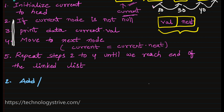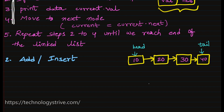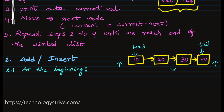The second operation we are going to discuss is add or insert operation. Adding a new node can happen in three different places: at the beginning, at the end of the linked list, or at some random position — for example, inserting after node 20. These are the three different places it mostly happens. Let's talk about inserting at the beginning.